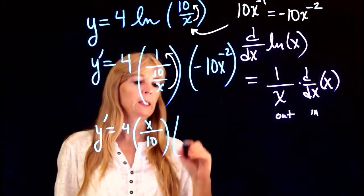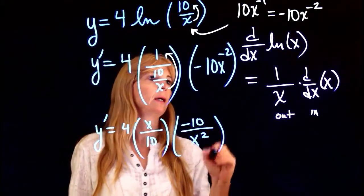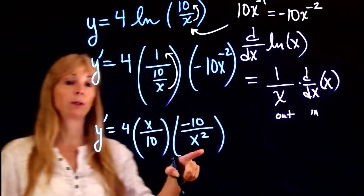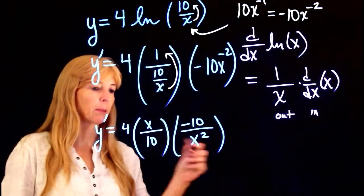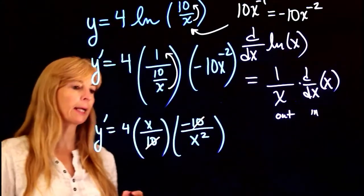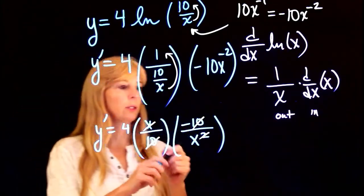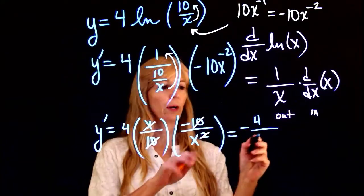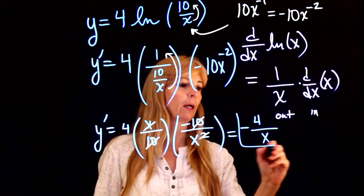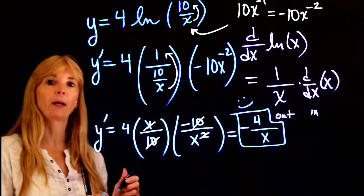And now this piece, I have a negative 10, and I'm going to bring the x squared to the bottom. And from here, you can see so nicely, some things cancel. That cancels, an x cancels. And so not losing my negative sign, I end up with negative 4 over x. And that's my final answer.